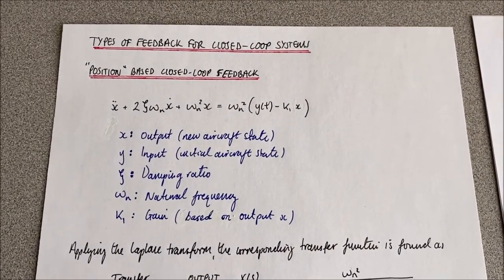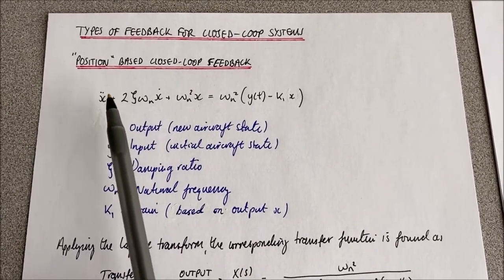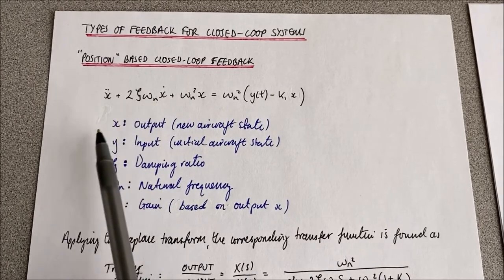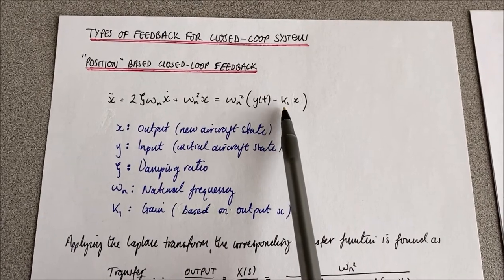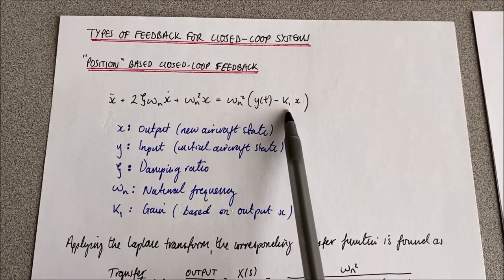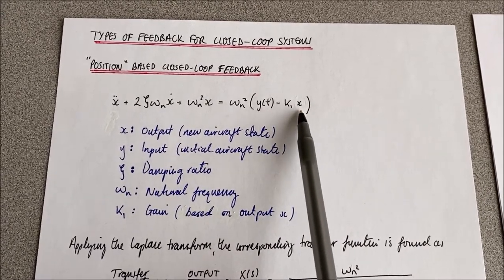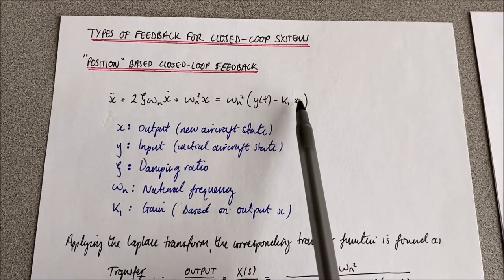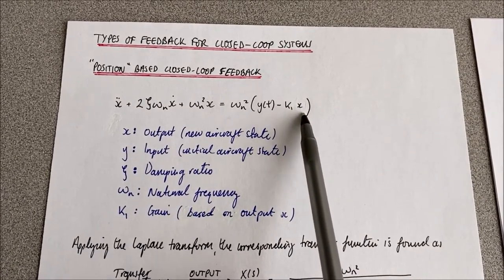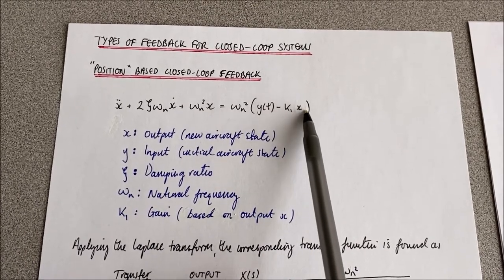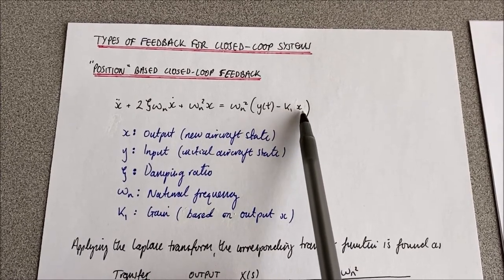There are some other characteristics of the dynamical system apparent in this equation, namely the damping ratio zeta, omega n which is the natural frequency, and the gain that we're going to apply to the closed-loop feedback given by k1. This corresponds directly to the output itself, as opposed to a derivative of x, as you will see in a moment for different types of feedback loops, or the second derivative of x in the acceleration case. Here, the gain is applied simply to the output itself.